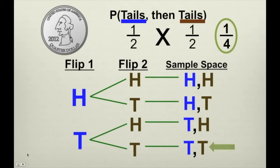I want to stress that each of these flips are independent events. The word independent means not affected by. If you say that you are independent, it means you're not affected by the actions of anybody else. Independent events mean the same thing — the second event isn't affected by the first event. When we flip our coin the second time, it doesn't matter if we landed on heads or tails the first time; that has no effect on the second flip. Therefore, they are independent events.